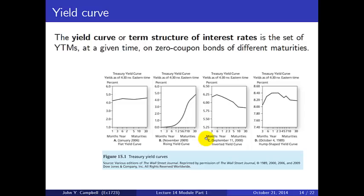The yield curve, or term structure of interest rates, is the set of yields at a given time on zero coupon bonds of different maturities. Examples from the Wall Street Journal show a flat yield curve, an upward-sloping yield curve, a downward-sloping yield curve, and a humped yield curve.